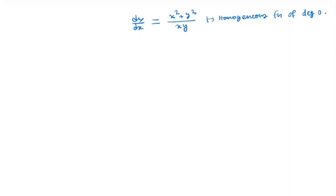So how do we solve the homogeneous equation? We solve this equation by substituting y = vx. By that, we have dy/dx = v + x(dv/dx).